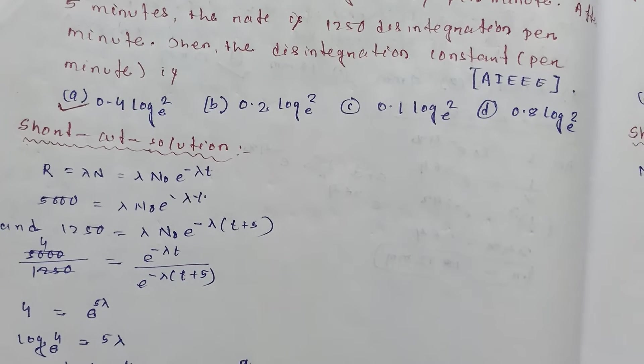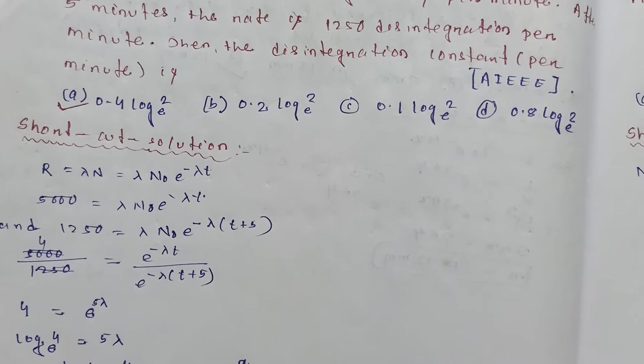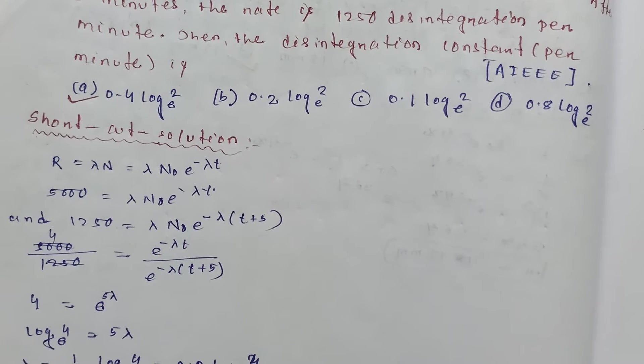We know the activity R equals lambda N, and N equals N0 e to the minus lambda t. So initially, R equals 5000.